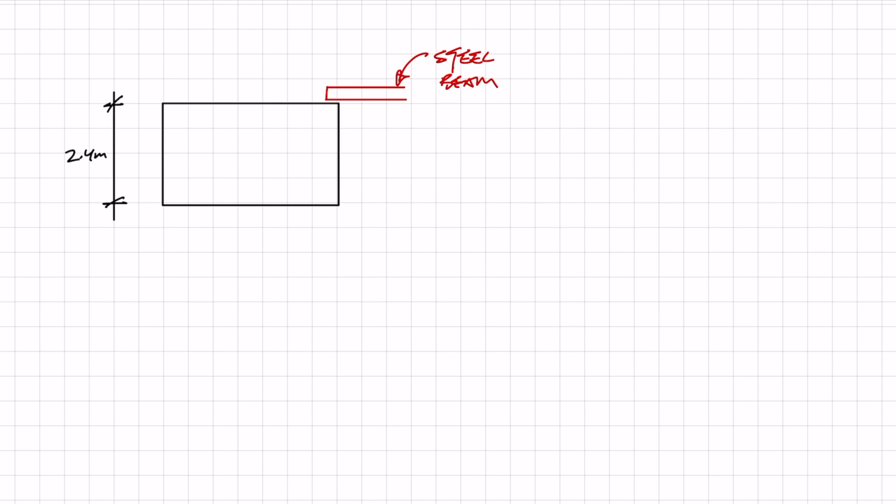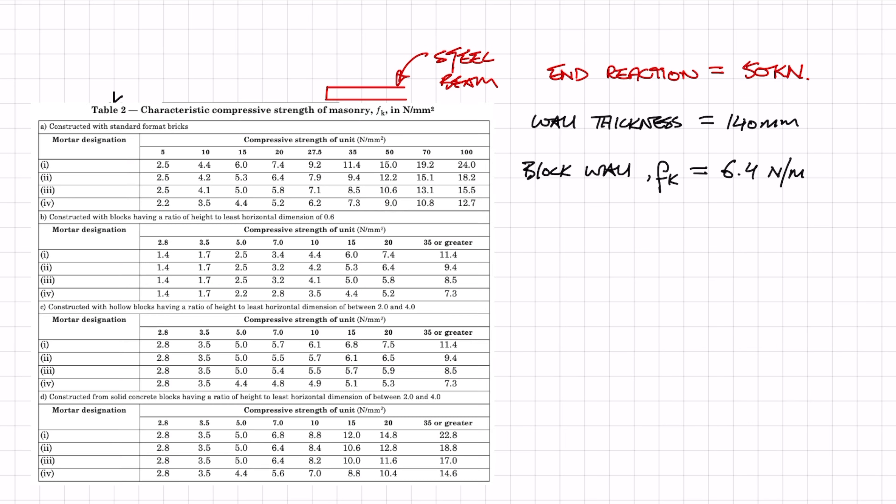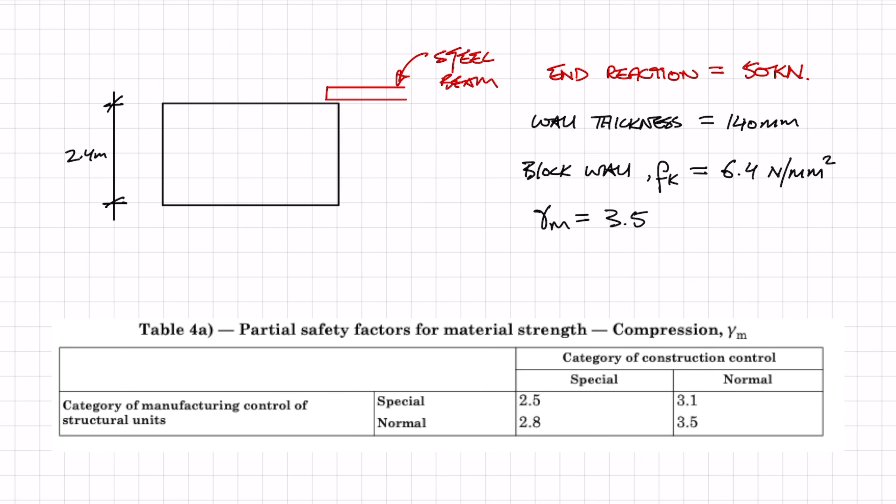In this example I'm only considering the end reaction of a beam. I'm not considering any other loads above the wall or any floor load spanning onto it, just to make things simpler. This steel beam is applying an end reaction of 50 kilonewtons, and this is the factored end reaction. The wall thickness is going to be 140 millimeters, and we're going to be using blockwork masonry. From the tables within the code, we're going to use a characteristic compressive strength fk of 6.4 newtons per millimeter squared, and the safety factor we're going to be applying is 3.5 for compression.